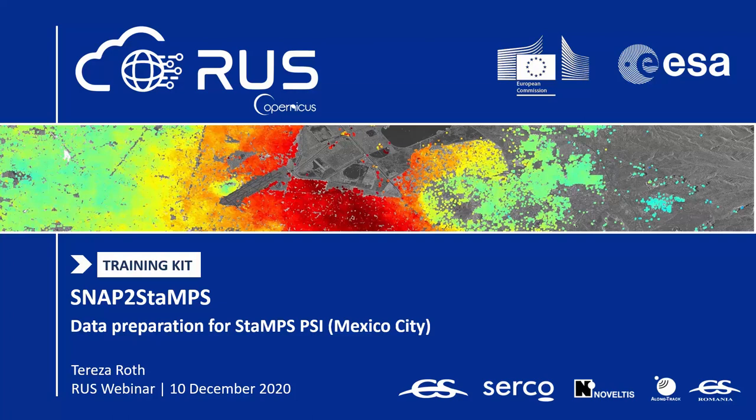Good afternoon everybody and welcome to the 34th webinar in the RUS Copernicus series. My name is Teresa Roth and I will be guiding you through this session today. We will look at the SNAP to StaMPS workflow and use it to prepare Sentinel-1 SLC time series for the ingestion to StaMPS permanent scatterer interferometric processing.